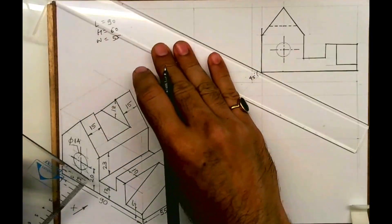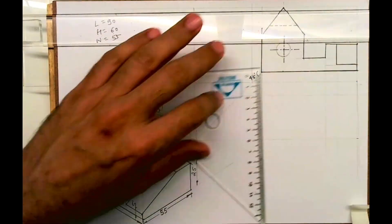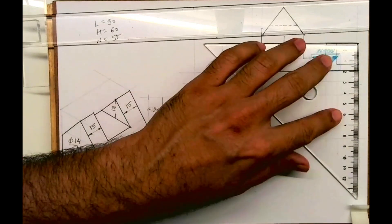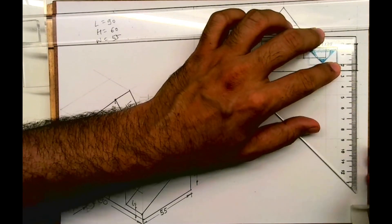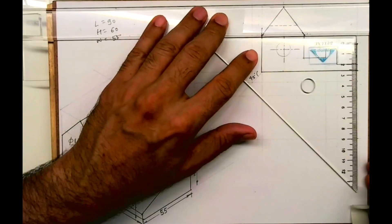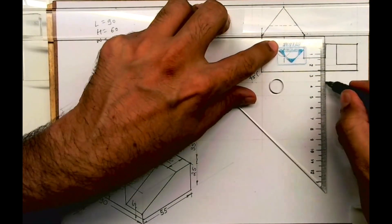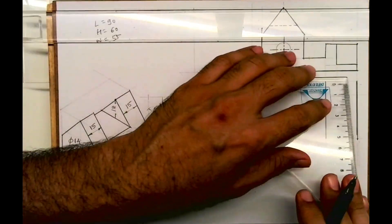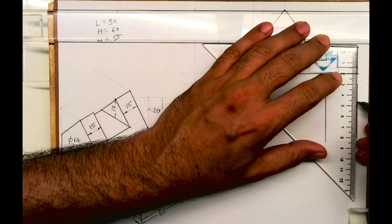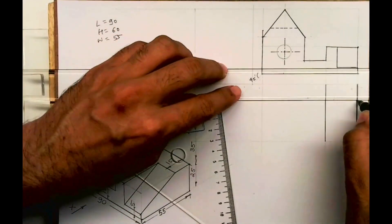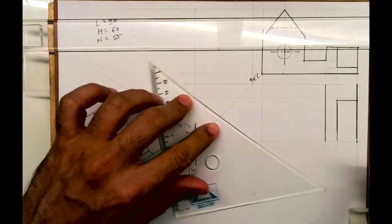Now we will draw top view. Top view is length and width. This I'll project down. See, this is 15, so take 15 from here. Draw horizontal line and from here vertical line. This is what you will get.